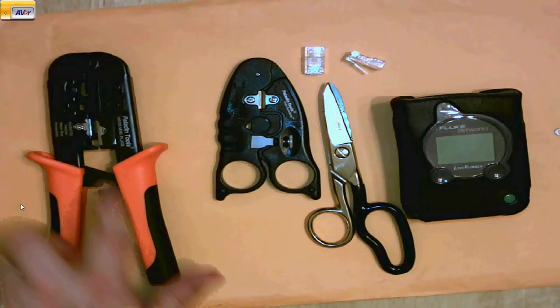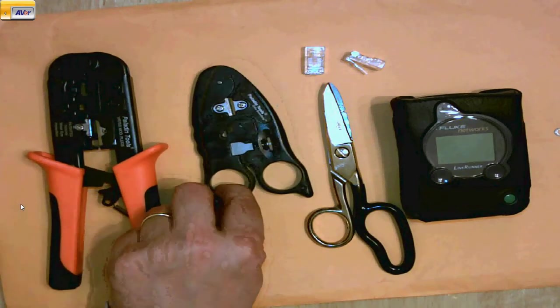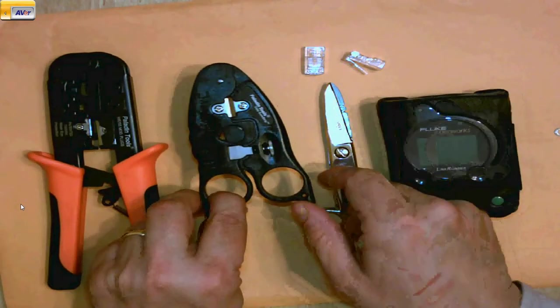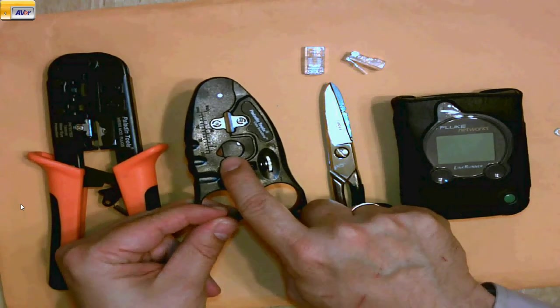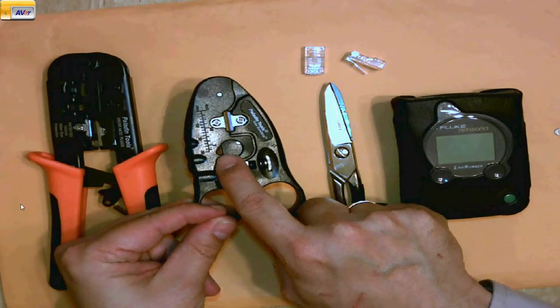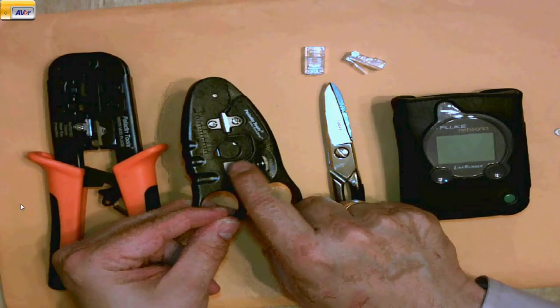So that's our crimp tool. The next tool we'll use is a teardrop stripper. Teardrop because the stripping occasion here is in a teardrop shape. There's a blade in there.